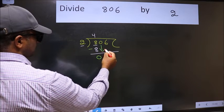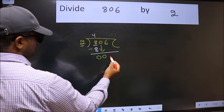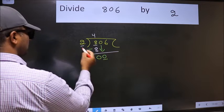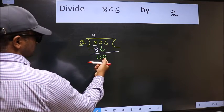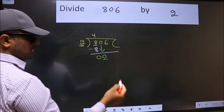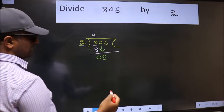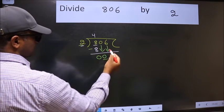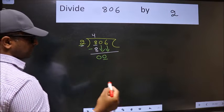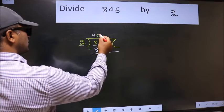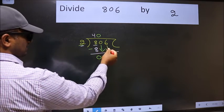After this, bring down the beside number. So 0 down. Now here we have 0 and here 2. 0 is smaller than 2, so we should bring down the second number. And the rule to bring down the second number is we should put 0 here. Then only we can bring this number down.